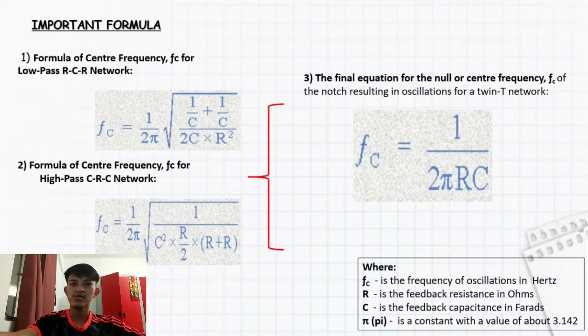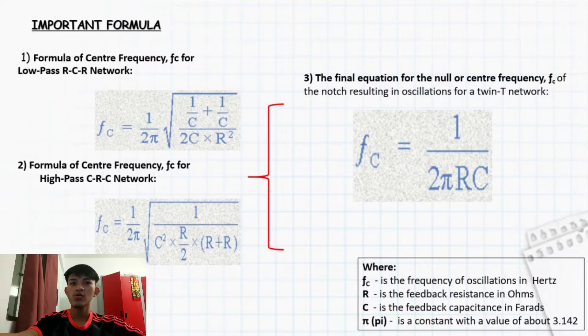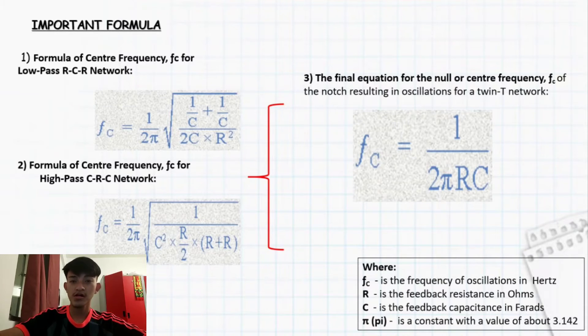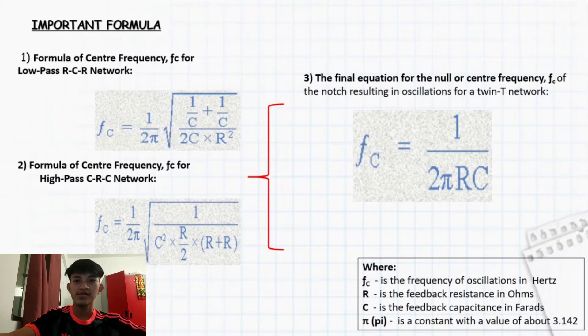For low-pass RCR network equation, we obtain it from the low-pass RCR network. The center frequency fc is equal to 1 over 2π times the square root of (1 over C plus 1 over C) multiplied by (R over 2) multiplied by (R over 2) times (R plus R).